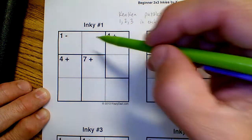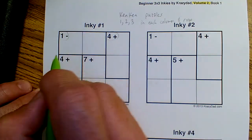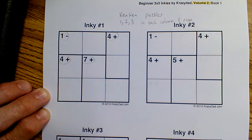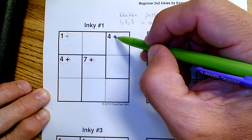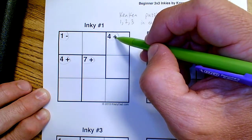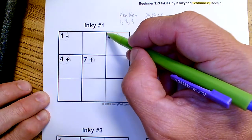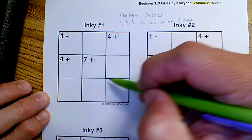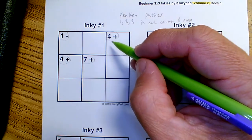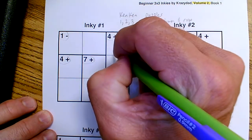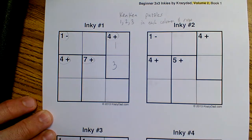Now you'll notice on this puzzle we have a 4+, we have a 1-, we have a 4+, and we have a 7+. What those are is this is the type of problem, an addition problem, and it has to have a sum equal to 4. And the dark bold boxes means that these two numbers will have a sum of 4. So it's either going to be 1 and 3, or we could flip it and go 3 and 1. Order does not matter.